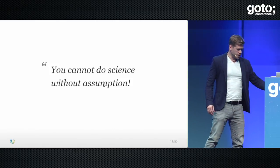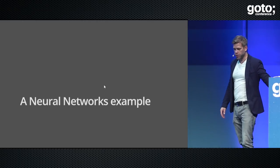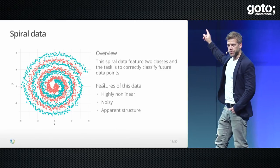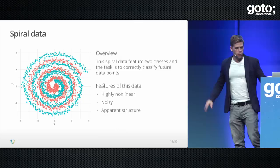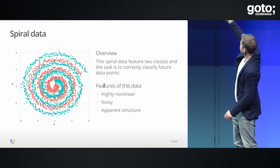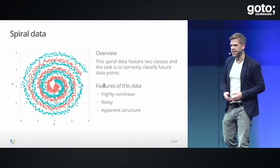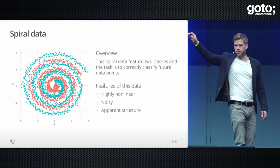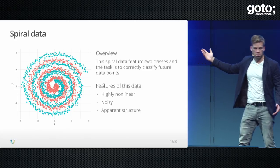Let's look at neural networks. This problem is highly non-linear — a classification task where you separate blue dots from red dots arranged in a spiral. It's non-stationary and quite nasty. How many hidden nodes do you need in a one-layer neural network to solve this? Ten? Twenty? Fifty? One hundred? Let's see.